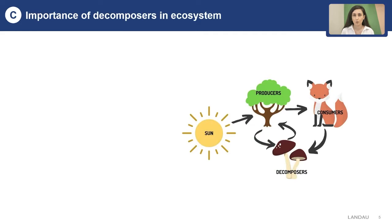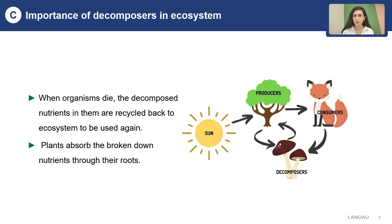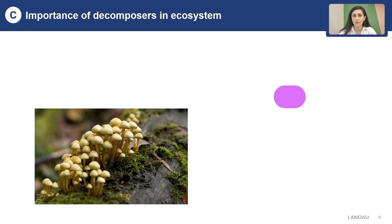Let's see the importance of decomposers in an ecosystem. When organisms die, nutrients in them are broken down by decomposers and then become available to be used again by plants. The organic materials in the dead organisms are broken down into inorganic substances so they can be absorbed by the roots of plants and used in the process of growth and photosynthesis.